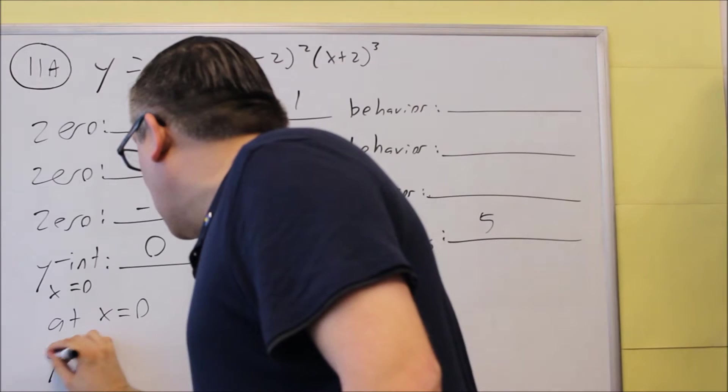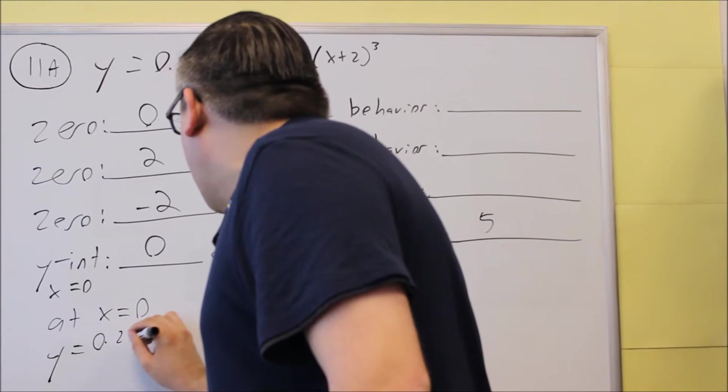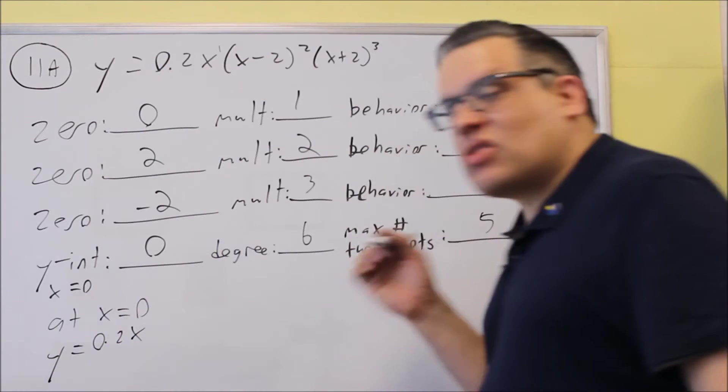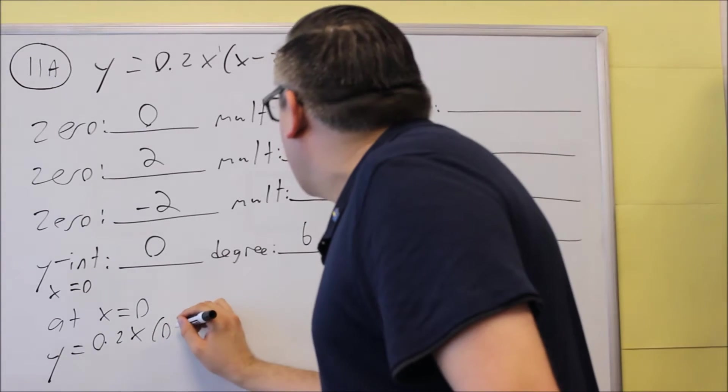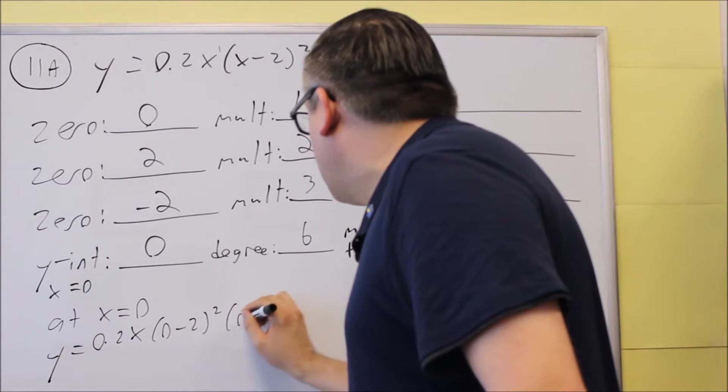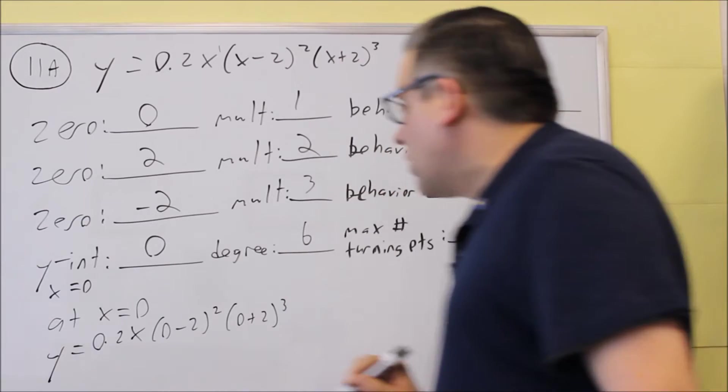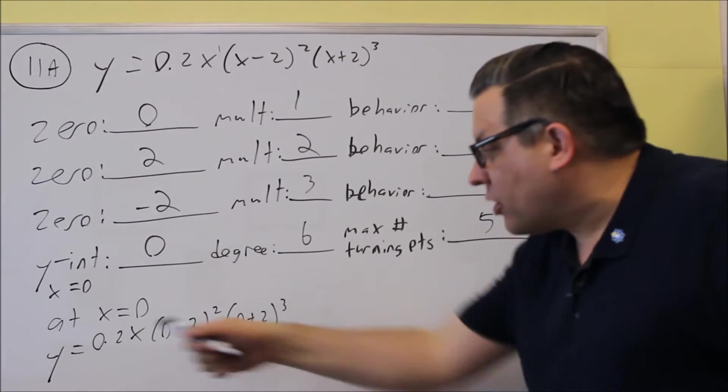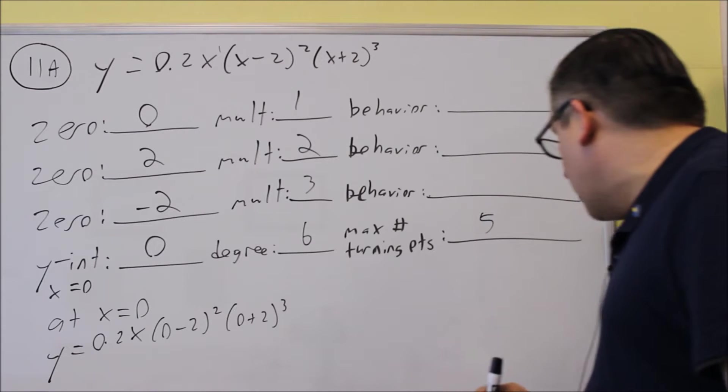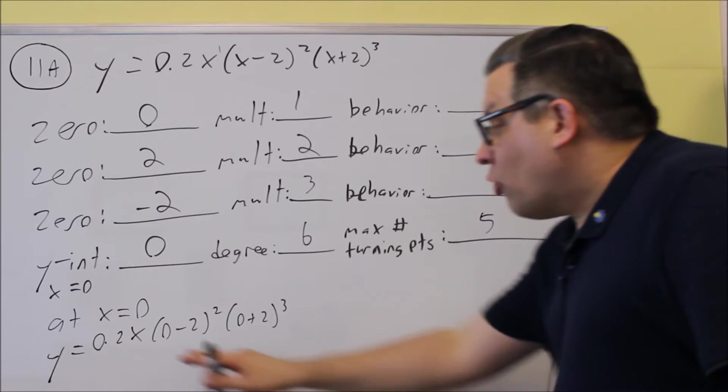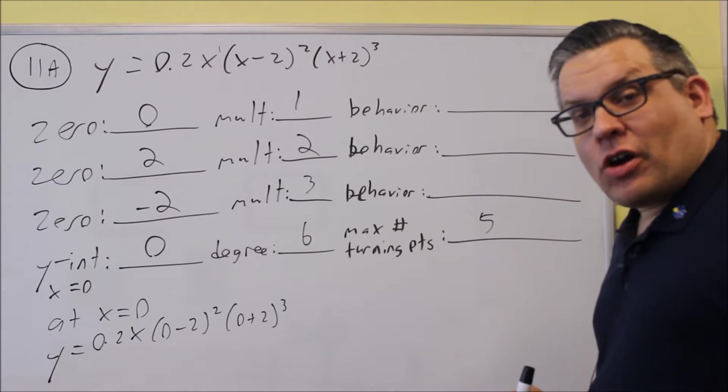So instead, what we do is we leave that alone. We put 0.2x there, just leave it, and we're going to put zeros in for the other ones. So we put zeros in the other ones, but we don't put a zero in that one there. We leave it as just regular x, because then when we simplify it, we'll be able to get an x for our answer.